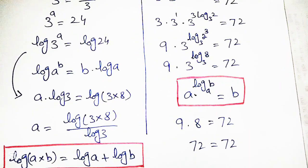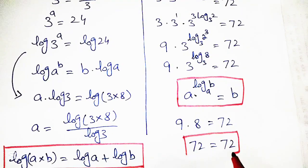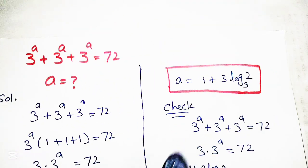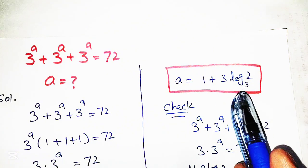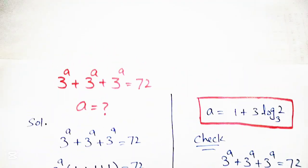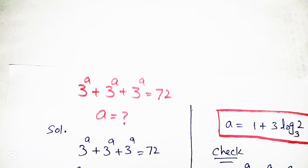9 into 8 is 72, which equals 72. This is the verification that our solution is correct. The final answer is a is equal to 1 plus 3 log base 3 of 2.